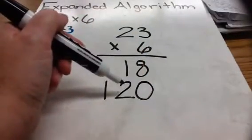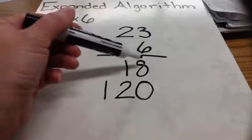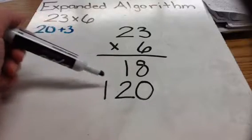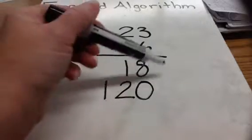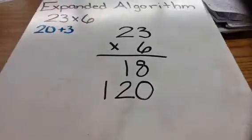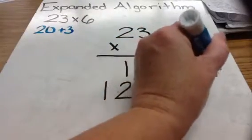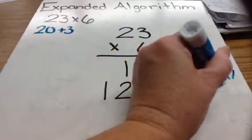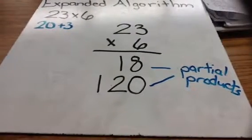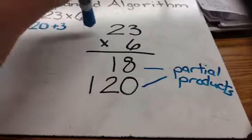I place 120 right below the 18, making sure that my numbers are lined up in the proper places — that's very important for the next step. The 8 is in the ones place and the 0 is in the ones place. In the tens place, this is in the tens place. I only have one digit in the hundreds place. These two numbers are called partial products. The product is the answer to a multiplication problem, so a partial product is part of the answer to a multiplication problem.